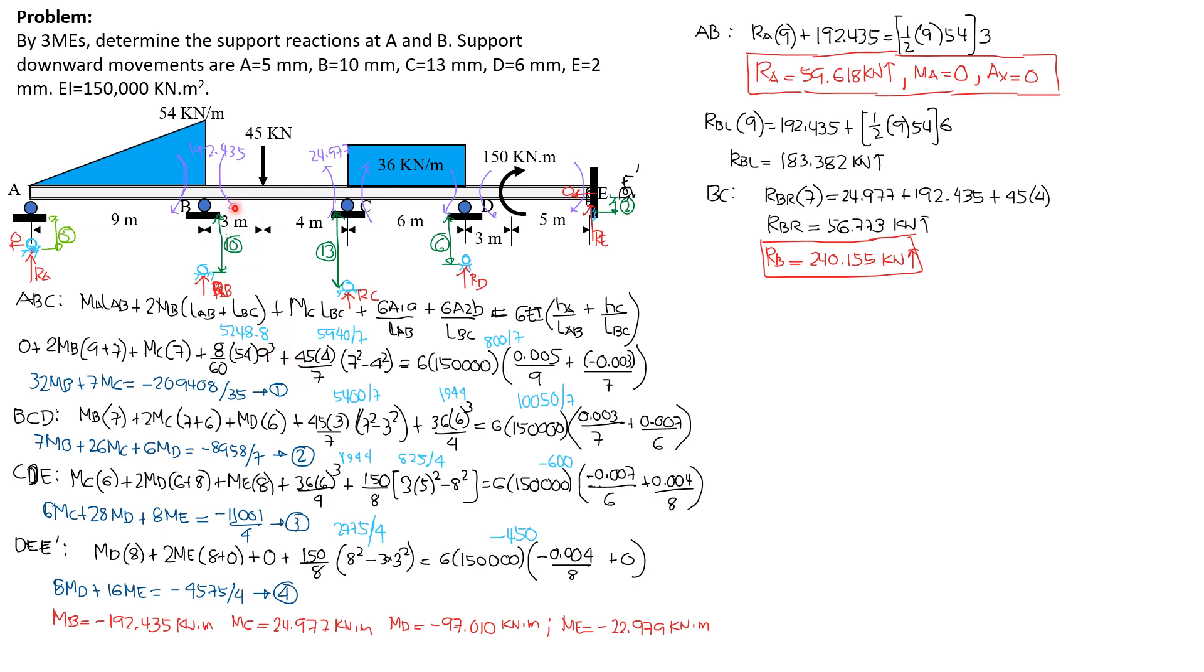This value is equal to 5248.8 kilonewton meter square. Then for 6 area 2B over LBC, the basic formula is PB over L, quantity L square minus B square, where P is 45, B is distance of that 45 from the right, which is from C, 4, over length 7, quantity length square, 7 square, minus B square, 4 square. The value is 5940 over 7, equals 6EI is 150,000 kilonewton meter square, which is given.